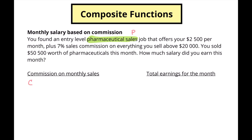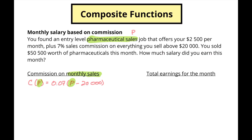Our commission based on the sales we make is going to be C(P) = 0.07 times (P minus twenty thousand). Because we sell everything above twenty thousand, we take our pharmaceutical sales P, subtract twenty thousand, and apply that seven percent. Whatever monthly sales we put into the equation, we get our commission for that month.